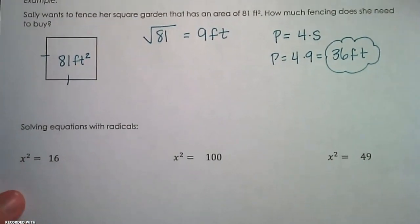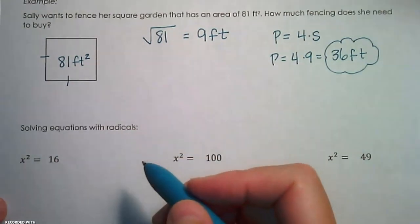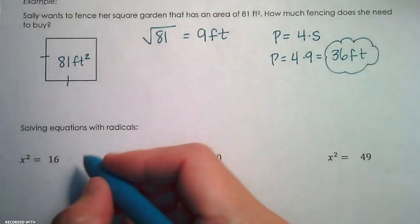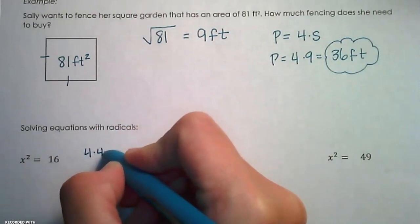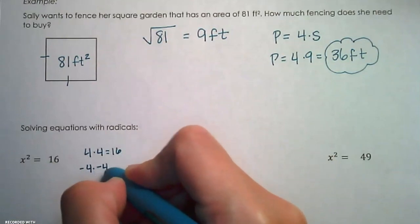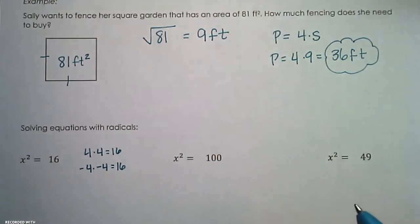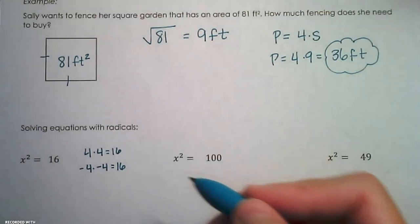Let's talk about how we solve an equation that involves a radical. So x squared equals 16 is really asking us, what number do I square to get 16? Well, I can square 4, because 4 times 4 is 16, but I can also square negative 4 to get positive 16. So really, this equation has two answers, positive or negative 4.